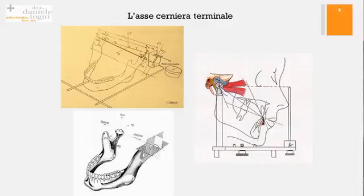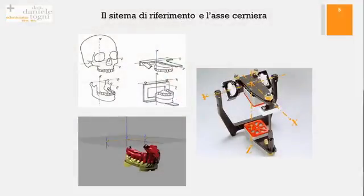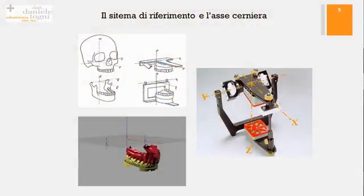Il concetto di asse cerniera credo che sia abbastanza chiaro, è un concetto fondamentale, ci dà le coordinate che ci permettono di avere uno spazio di riferimento. Il dottor Chionia ci ha parlato della carta geografica, io cercherò di parlarvi del GPS. Questo è il sistema di riferimento tra cranio e articolatore. Lo spazio digitale è lo stesso dell'articolatore: ha il piano di riferimento, il piano assi orbitale e il sistema di assi. L'asse cerniera è quello giallo, il sistema di riferimento è lo stesso, abbiamo la possibilità di misurare le coordinate di ogni punto nello spazio.